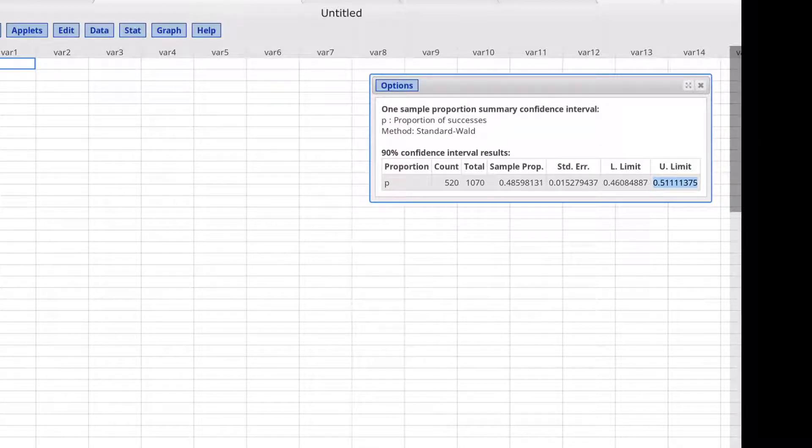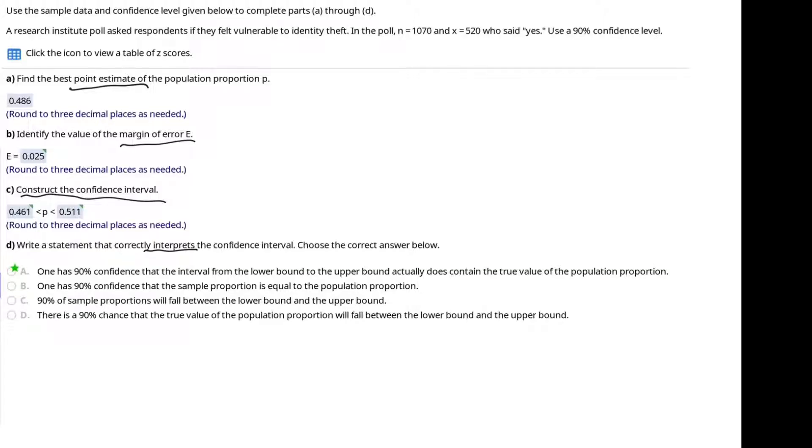We'll find the difference between those values and then divide that by two. The confidence interval went from 0.4608 to 0.5111, if we round to four decimal places. We'll subtract those values,